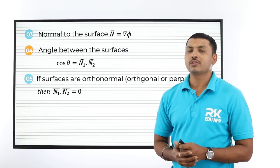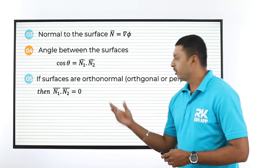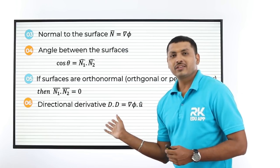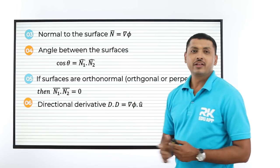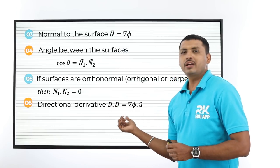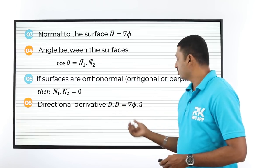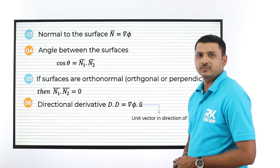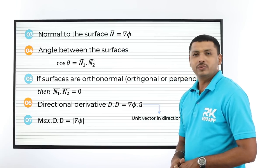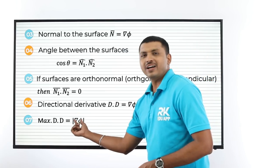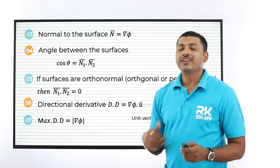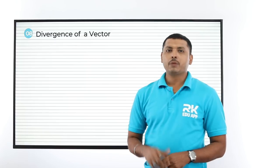Next important topic is directional derivative (DD). Its formula is: directional derivative = gradient of φ dot û, where û is the unit vector in the direction. Also related to gradients: the maximum directional derivative is obtained by taking the modulus of gradient of φ.